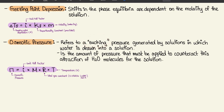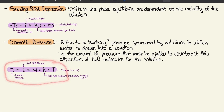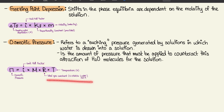Osmotic pressure refers to the pressure generated by solutions where water is drawn in — it is the pressure needed to counteract attraction of H₂O molecules to the solution. The equation is π = i × M × R × T, where i is the van't Hoff factor, M is molarity, R is the ideal gas constant, and T is temperature in Kelvin. That concludes Chapter 9.